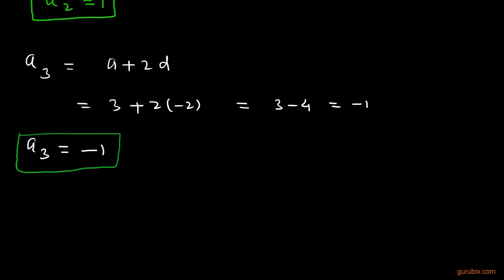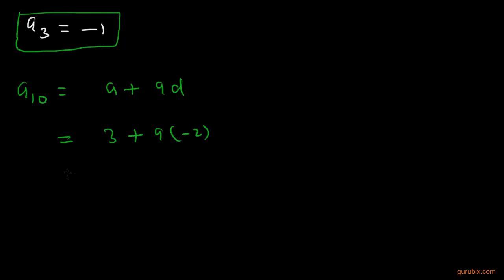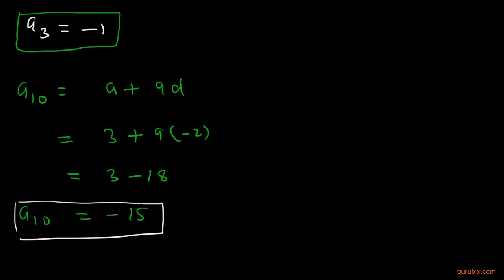Now we have to calculate the tenth term, A10. A10 = A + 9D = 3 + 9×(-2) = 3 - 18 = -15. Therefore, A10 = -15.